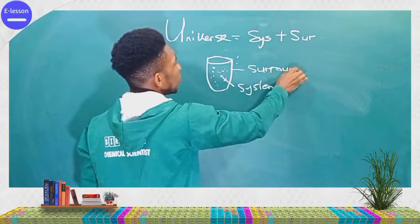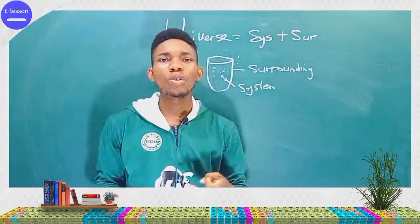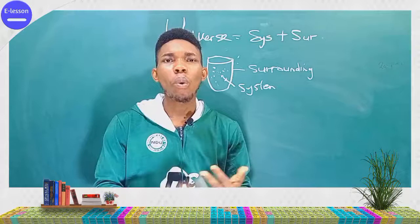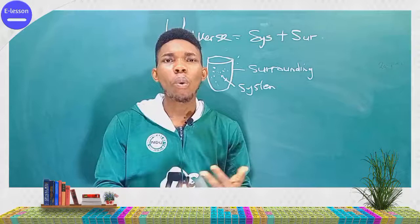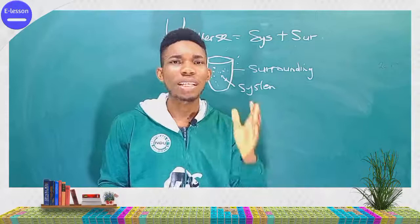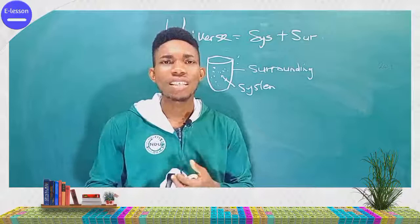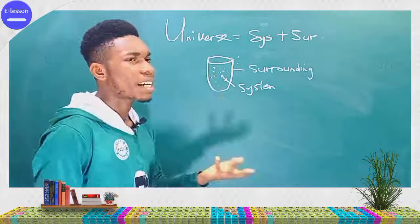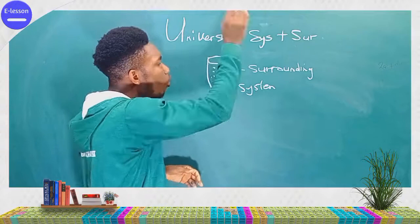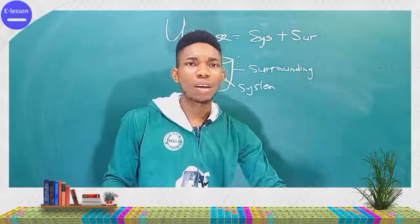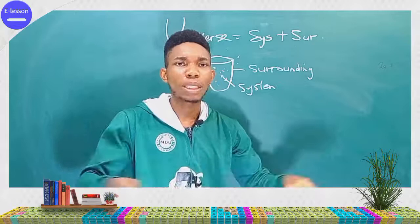We have three types of systems: the open system, the closed system, and the isolated system. An open system is any system that exchanges matter with the surrounding and also exchanges energy in the form of heat, work, or radiation. For the zinc granules in an open beaker, since the beaker is open, it can share matter with the environment and also share energy — therefore it is an open system.